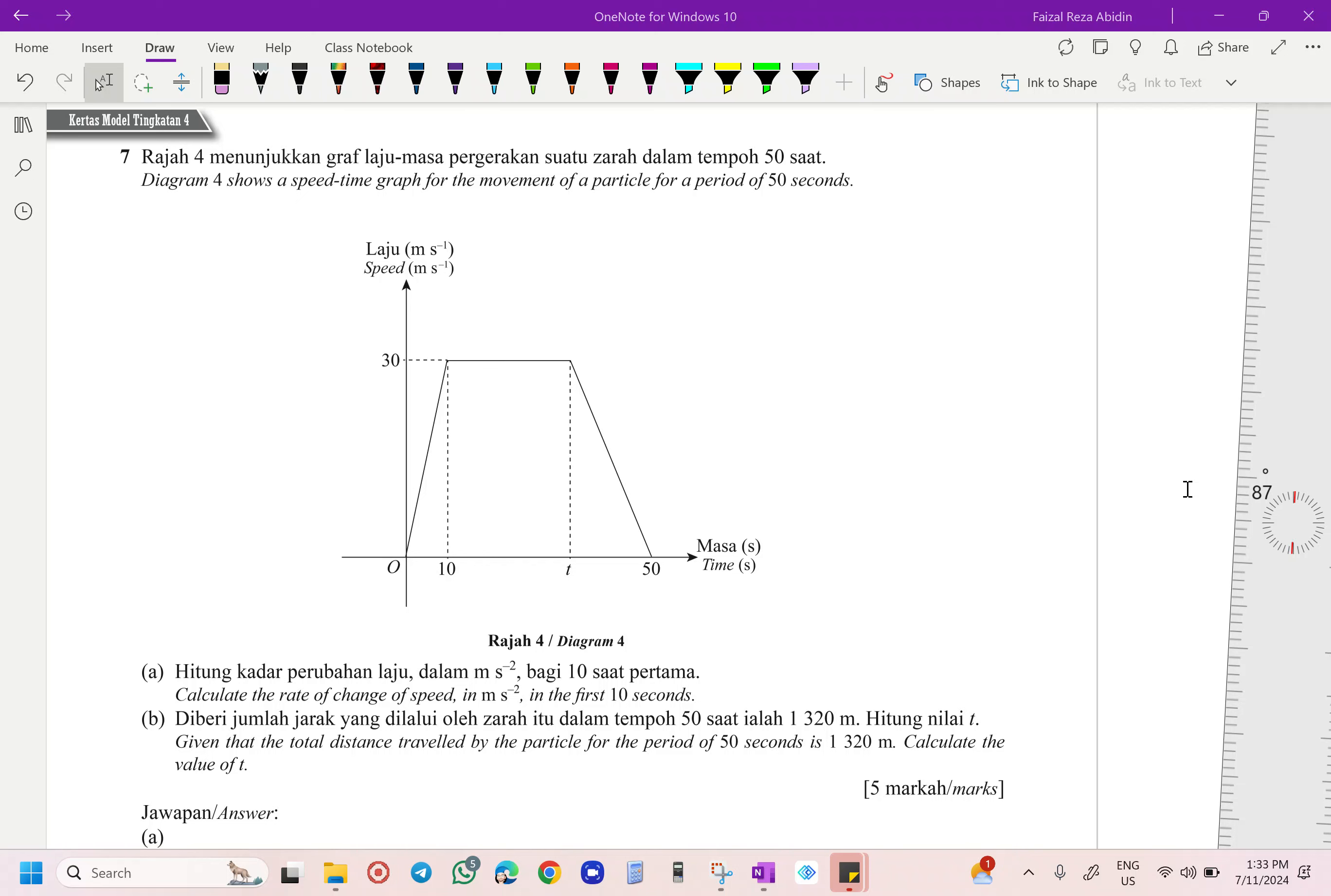Graph. This one, we have our speed time graph. Diagram 4 shows a speed time graph for the movement of a particle for a period of 50 seconds.